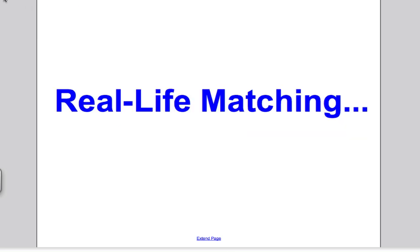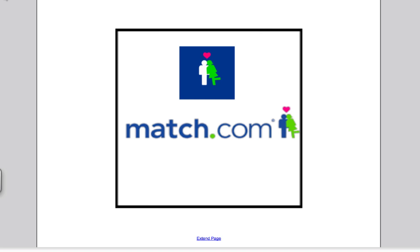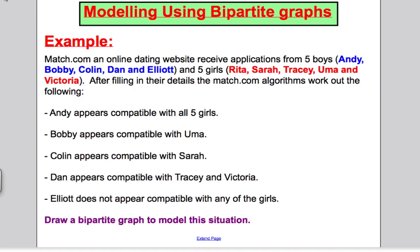As background, let's talk about some real-life matchings where these might arise. I'm going to give you a problem here. Let's think about Match.com, an online dating website, and their use of potential matching algorithms or bipartite graphs to see if people are suitable to go out with each other. This is how we model things using what we call bipartite graphs.